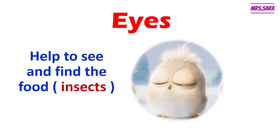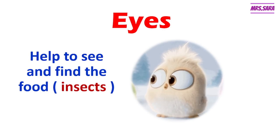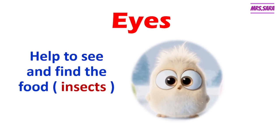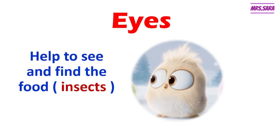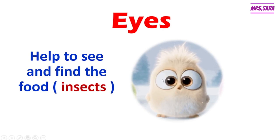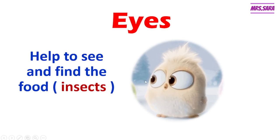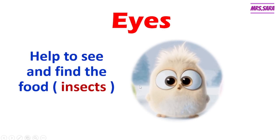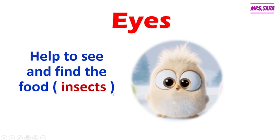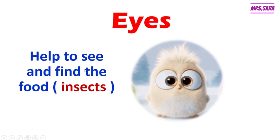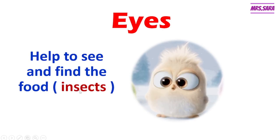The name of the food that the bird eats, Primary 2, is called insects. Insects, like worms — do you know the meaning of worm? — and flies, like the flies that we can find in our house. So any bird eats insects, and any bird has two eyes to help them to see and find the food, which is called insects.